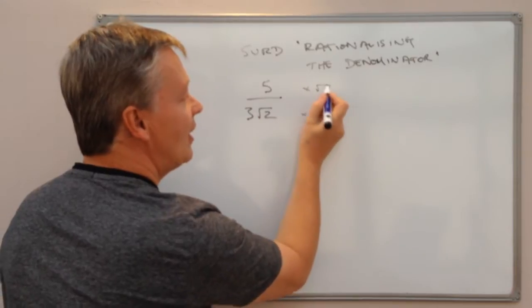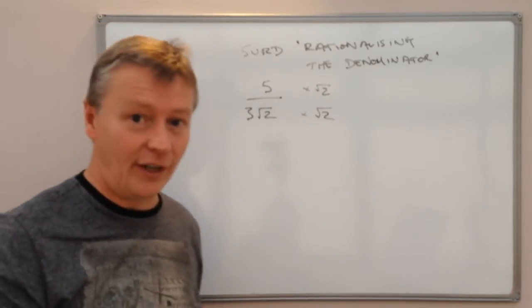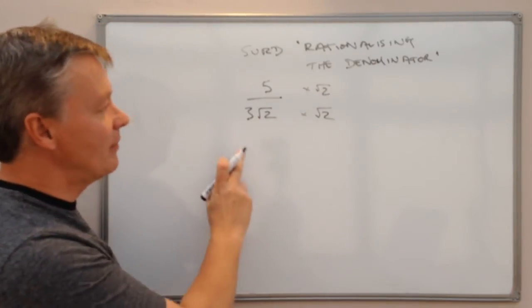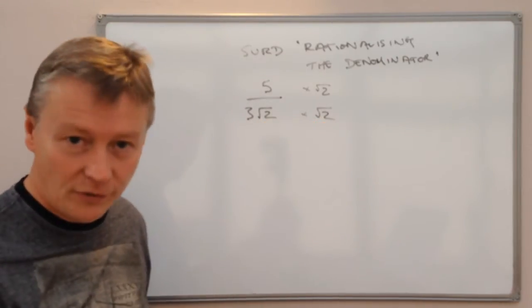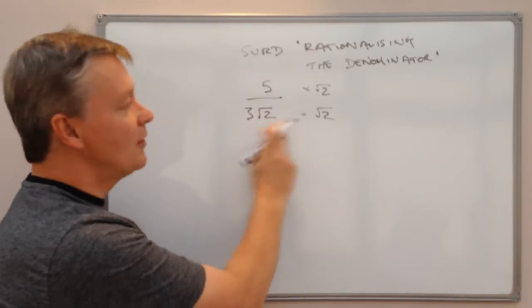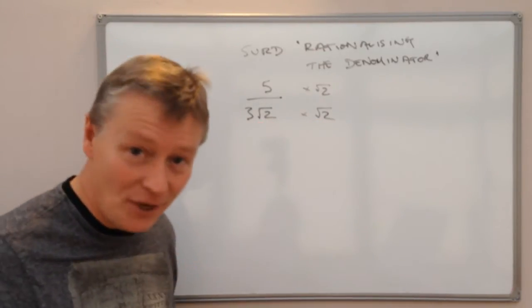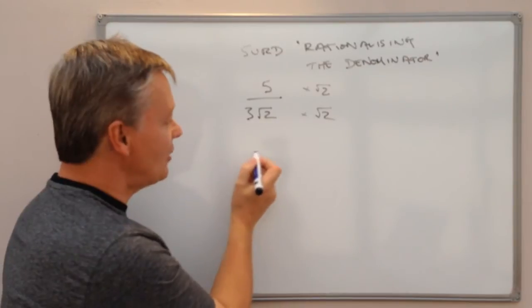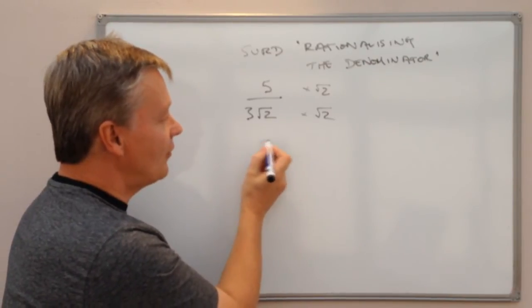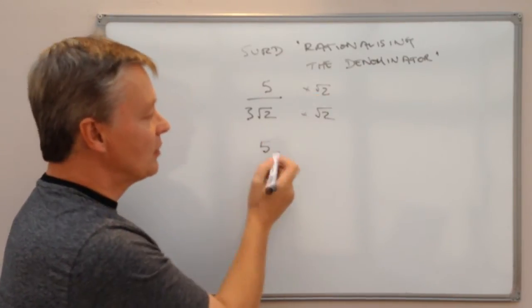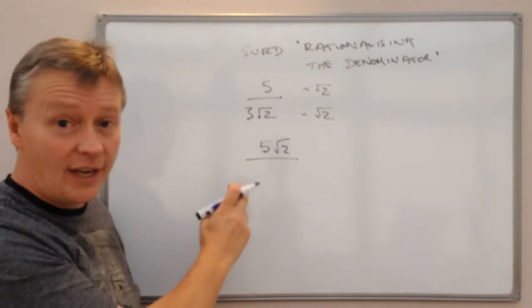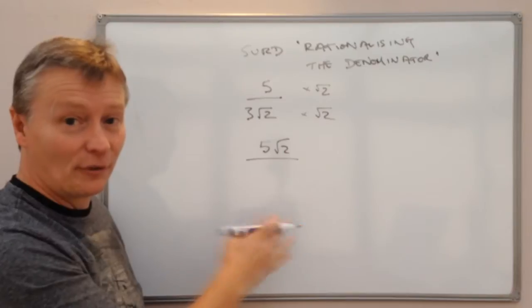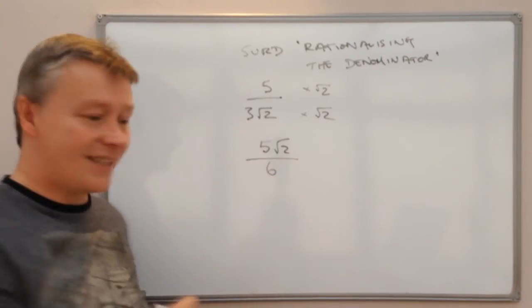It's exactly the same as dealing with any other fraction. So what I've got at the bottom now is I've got 3 root 2 times root 2. Well root 2 times root 2 is 2, it's a whole number. So actually at the top I've got 5 multiplied by root 2 and at the bottom I've got 3 times 2. Well 3 times 2 is 6.